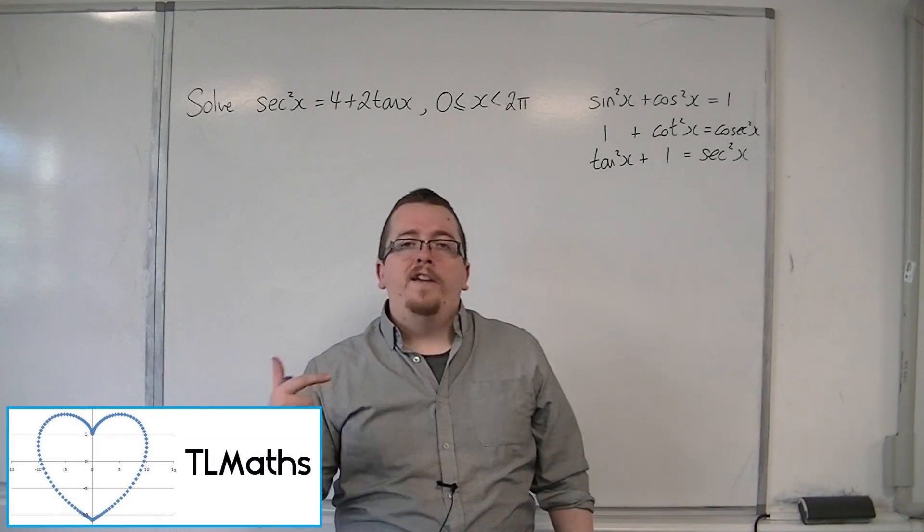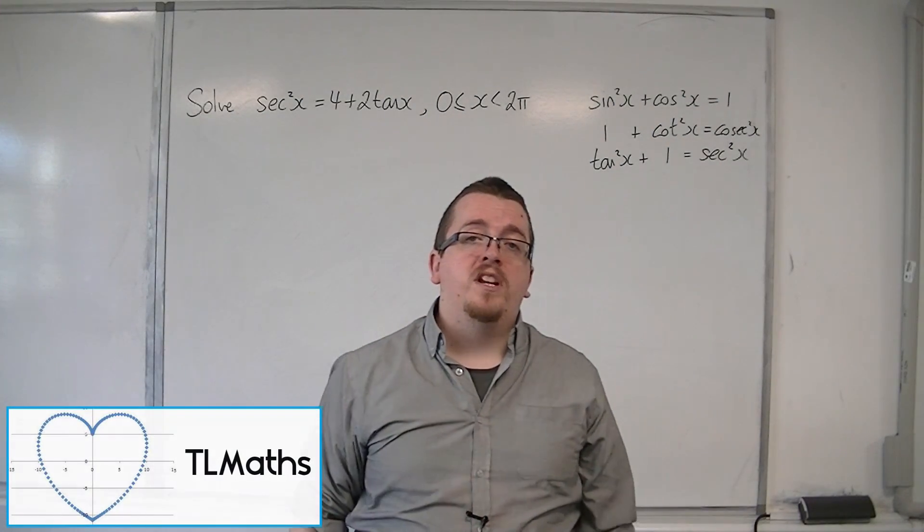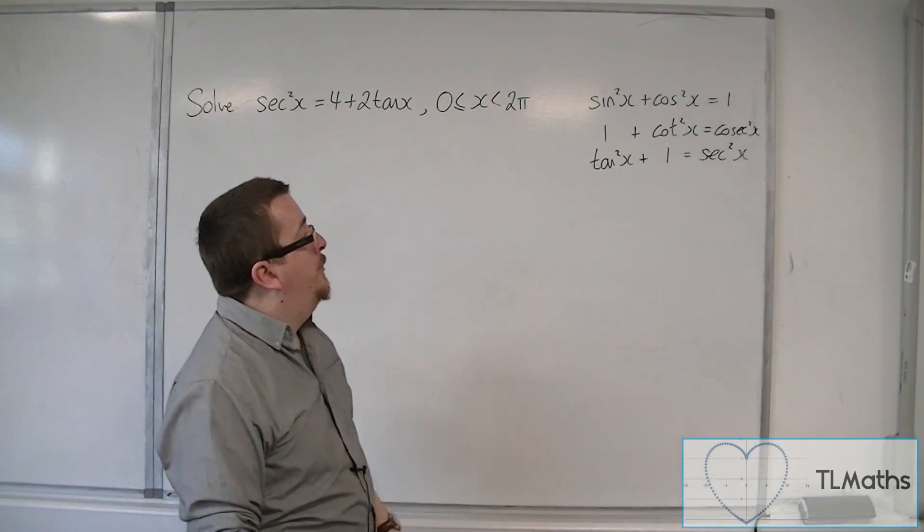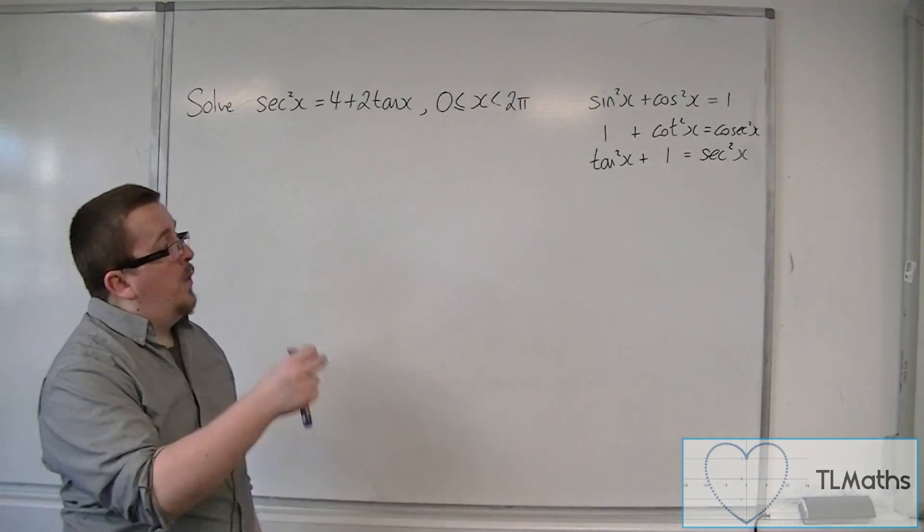In the previous video, I introduced you to two new trigonometric identities. And here they are. 1 plus cot squared x is cosec squared x. Tan squared x plus 1 is sec squared x.